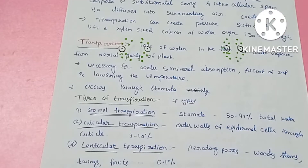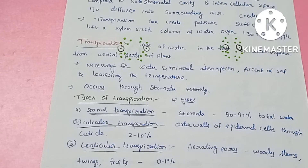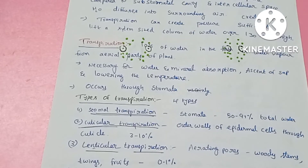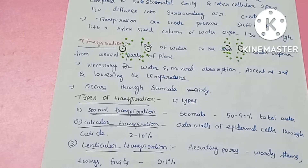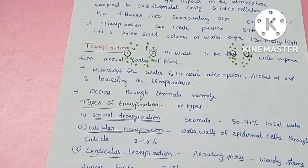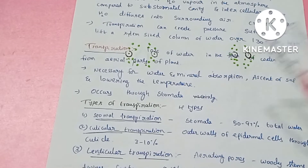Transpiration is the loss of water in the form of water vapor. The plant has excess water, and this water vapor loss is called transpiration. Not only leaves — aerial parts, green stems, and wheat also undergo transpiration. Transpiration helps in the upward movement of water and minerals, also called ascent of sap.